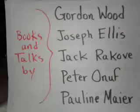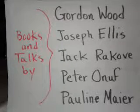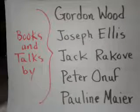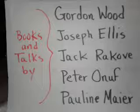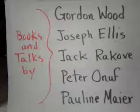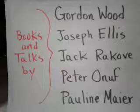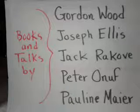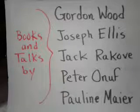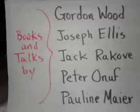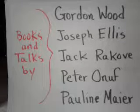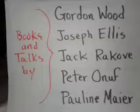'Nor is the integrity of the Senate the only reliance. The Constitution has provided some important guards against the danger of executive influence upon the legislative body. He declares that no senator or representative shall, during the time for which he was elected, be appointed to any civil office under the United States which shall have been created, or the emoluments whereof shall have been increased during such time. And no person holding any office under the United States shall be a member of either house during his continuance in office.'